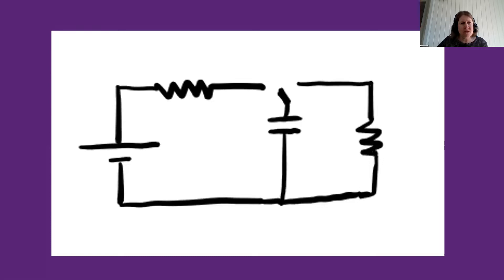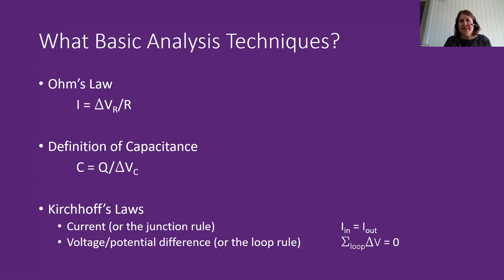What basic analysis techniques do I mean that you've already been using? First and foremost, Ohm's law — the potential difference across a resistor divided by its resistance tells us the current at that location. We also add the definition of capacitance: the capacitance of a capacitor is the magnitude of the charge stored on one plate divided by the potential difference between those plates. That definition helps us analyze what's going on when the capacitor is present.